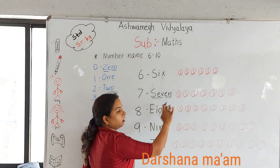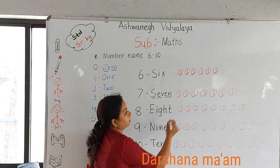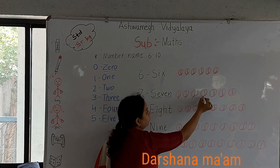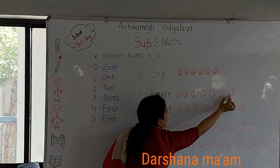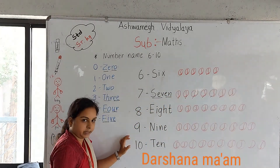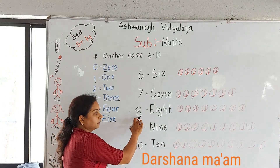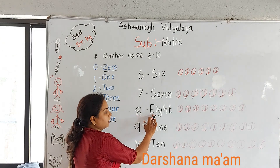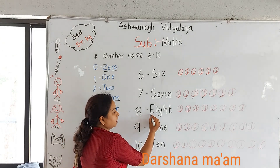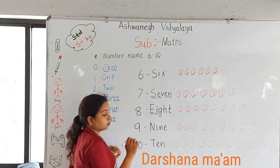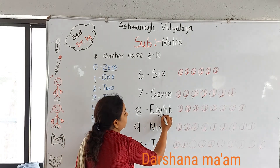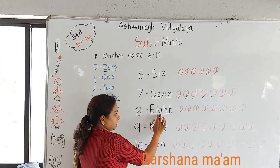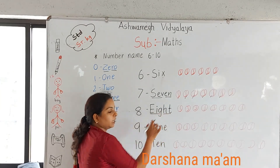Our object is ball. Count with me: 1, 2, 3, 4, 5, 6, and 7. Next number is 8. 8 - E-I-G-H-T - 8.